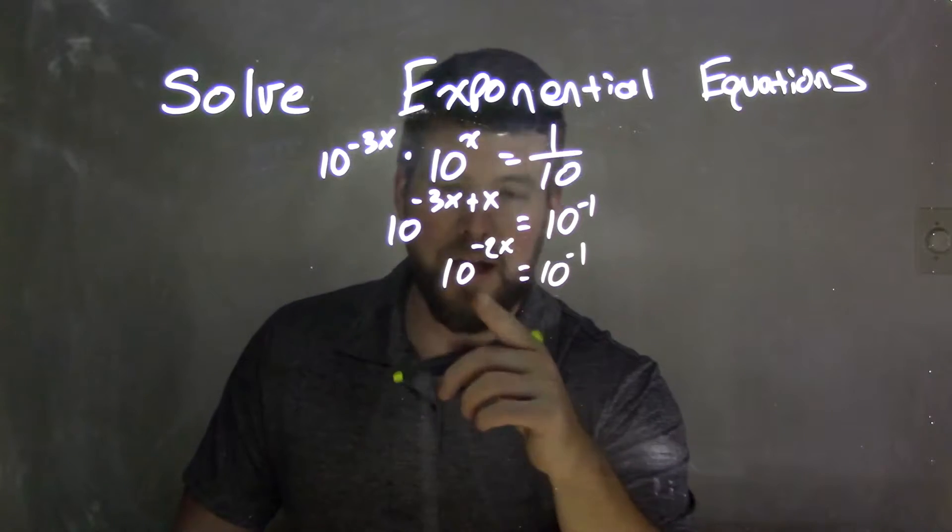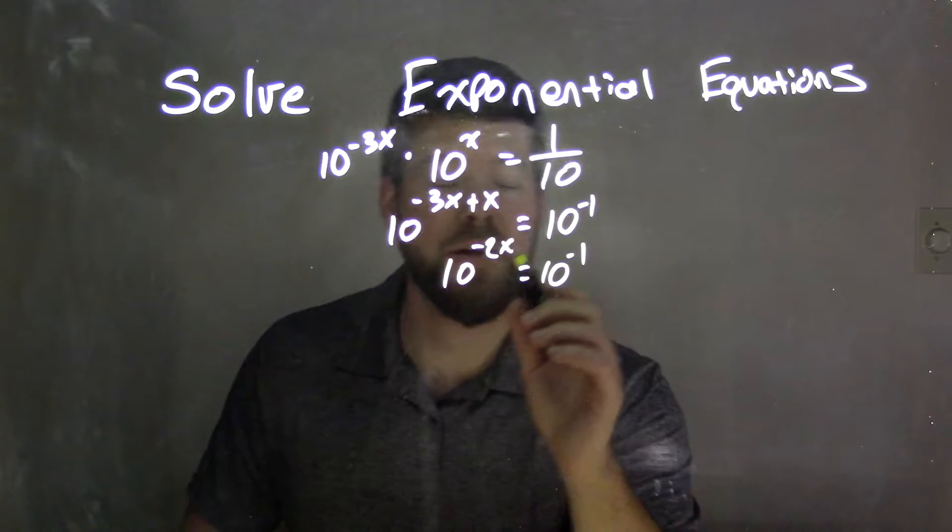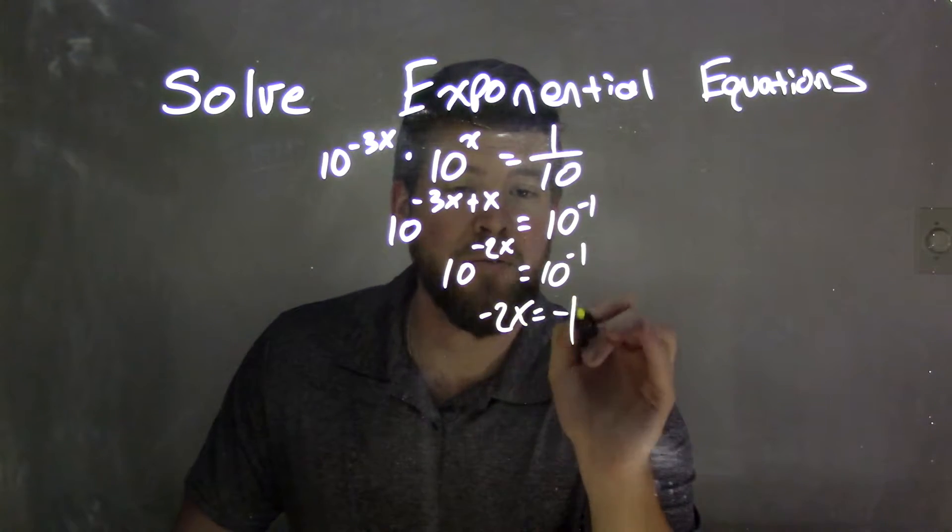Now it comes into play. We have the same base. Since we have the same base, we can set our exponents equal to each other over this equal sign. So -2x equals -1.